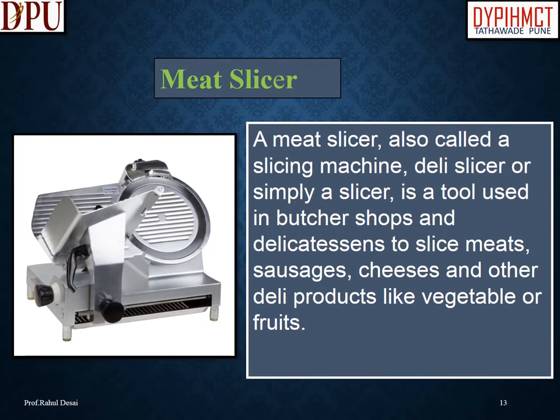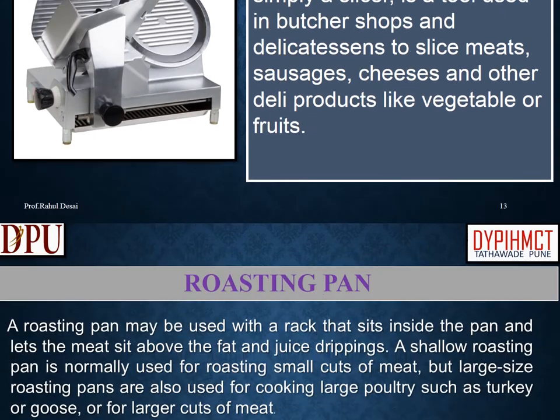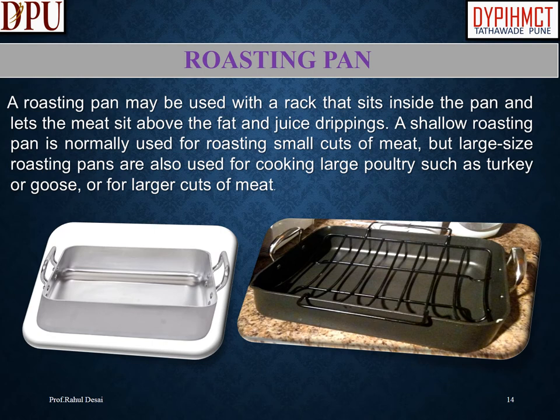A meat slicer, also called a slicing machine, deli slicer, or simply a slicer, is a tool used in butcher shops and delicatessens to slice meats, sausages, cheeses, and other deli products like vegetables or fruits. A roasting pan may be used with a rack that sits inside the pan and lets the meat sit above the fat and juice drippings. A shallow roasting pan is normally used for small cuts of meat, but large-size roasting pans are also used for large poultry such as turkey or goose, or for larger cuts of meat.